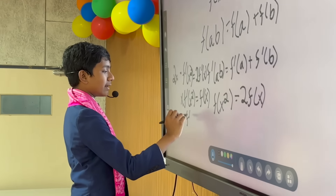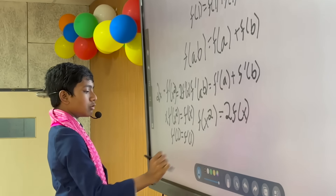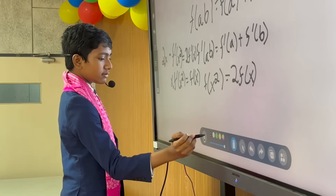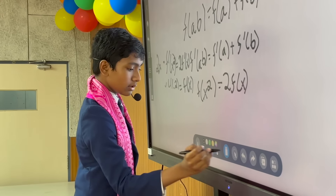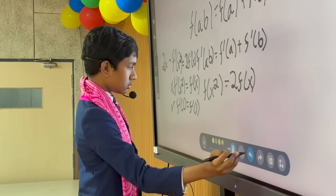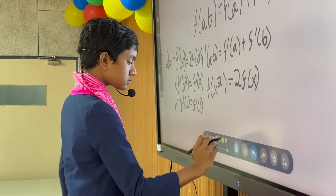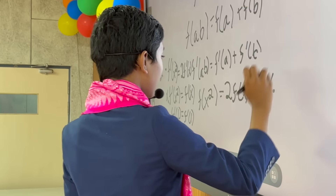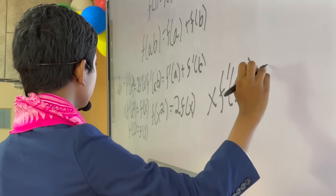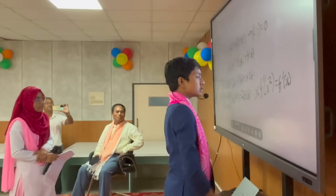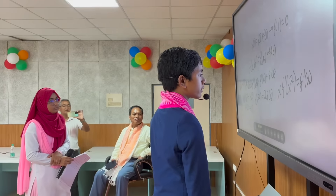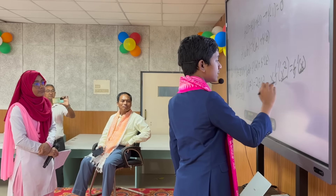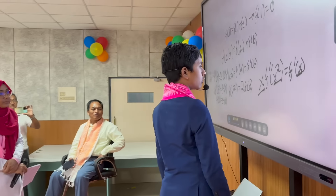If we plug in 1 to this formula, we get f'(1) = f'(1). Which means that if this is true and the derivative exists, then this formula is valid. There is no point in the positive real numbers where this is undefined, because this is always a real number, this is also always a real number, and this is also always a real number.